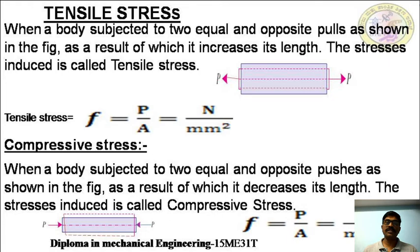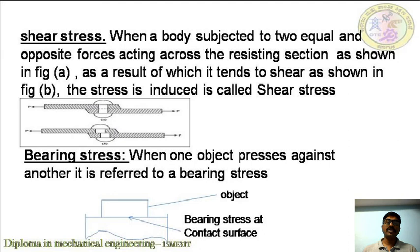Shear stress: when a body is subjected to two equal and opposite forces acting across a resisting section, as shown in figure A, as a result of which it tends to shear as shown in figure B, the stress induced is called shear stress. Shear stress = applied load / resisting cross-sectional area. Bearing stress: when one object presses against another, it refers to bearing stress — where an object rests on another object, we call it bearing stress at the contact surface.